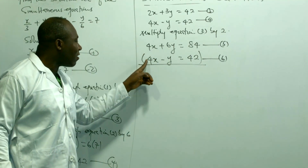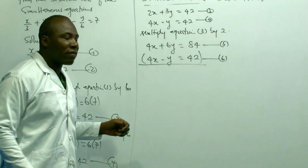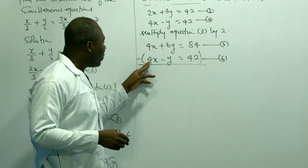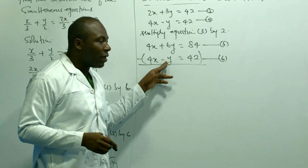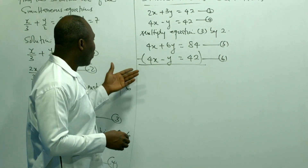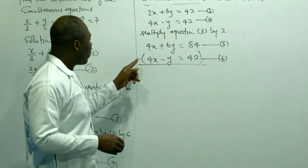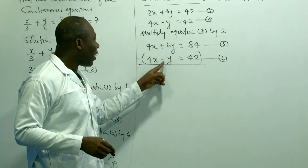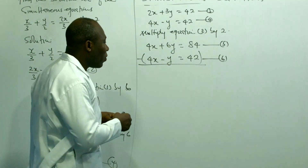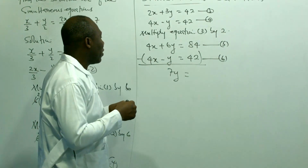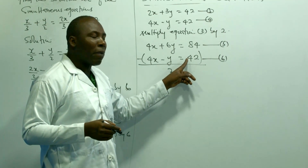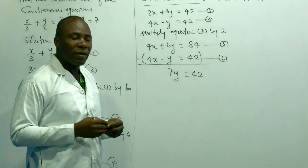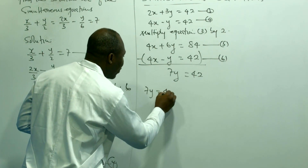The sign of x in both equations is positive, so we cannot add — we have to subtract. I put a negative sign, which means the terms change sign. Minus 4x plus 4x gives 0, eliminating x. Plus y plus 6y gives 7y. And the right side gives 42.